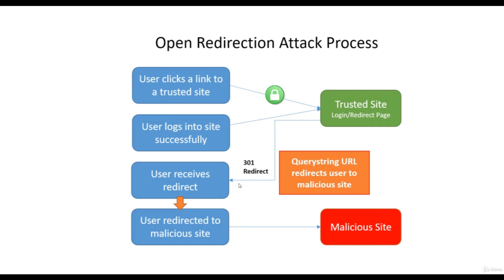But if there is a 301 redirection, the user will receive the redirect and be redirected to the malicious site. They won't be voluntarily going to the malicious site — instead, they are redirected there. The user can input anything on this malicious site, and the hacker can access that information. So redirection can also be a powerful attack in the context of XSS.